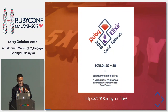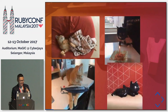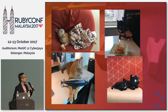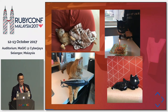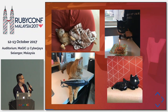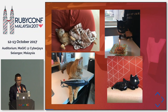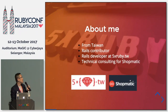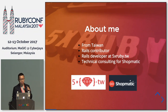We also have two cats in our office — they are kind of our mascots, watching over us. We celebrate the cat's birthday and they have a favorite toy: a fake fish. About me — I come from Taiwan, I am a Rails contributor, now an address developer focused on Ruby, and also a technical consultant for Shopmatic, which is an e-commerce platform.